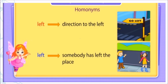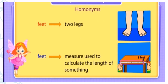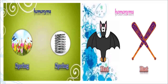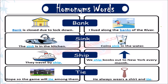Next, we have 'left': the first meaning is direction to the left, while the second meaning is somebody has left the place. Next, 'feet': the first meaning is two legs, while the second meaning is the measure used to calculate the length of something. We also have 'pen', 'palm', 'spring', and 'bat' as examples of homonyms.